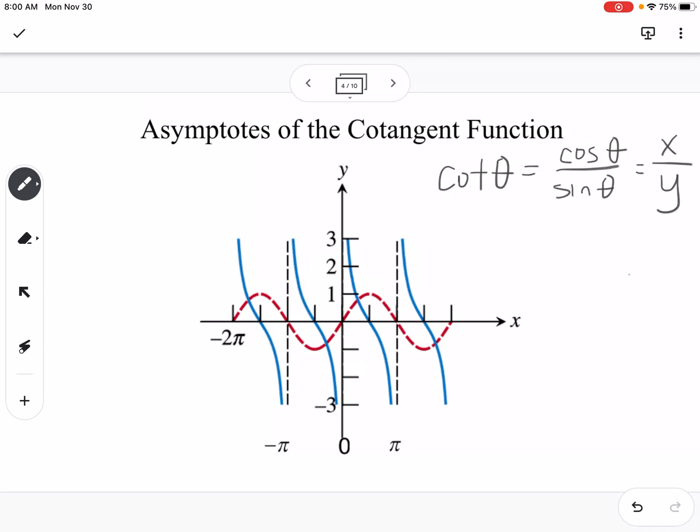This means with cotangent, our asymptotes are going to be where y equals 0. If you think of your unit circle, where y is 0, it's going to be here and here, which would be 0 pi, pi, 2 pi, 3 pi, 4 pi, and so on.